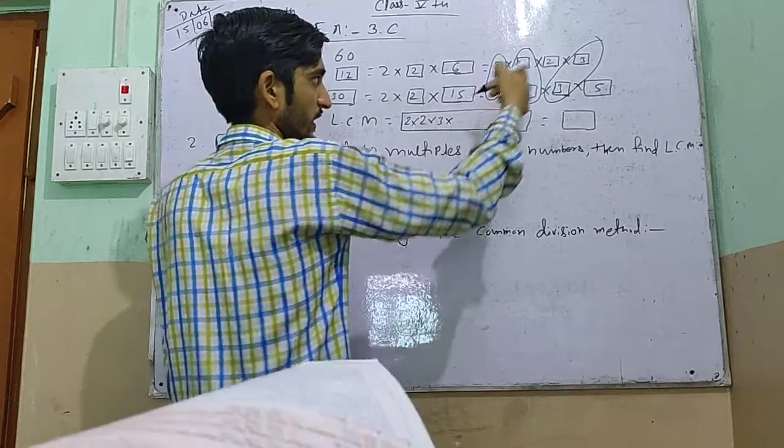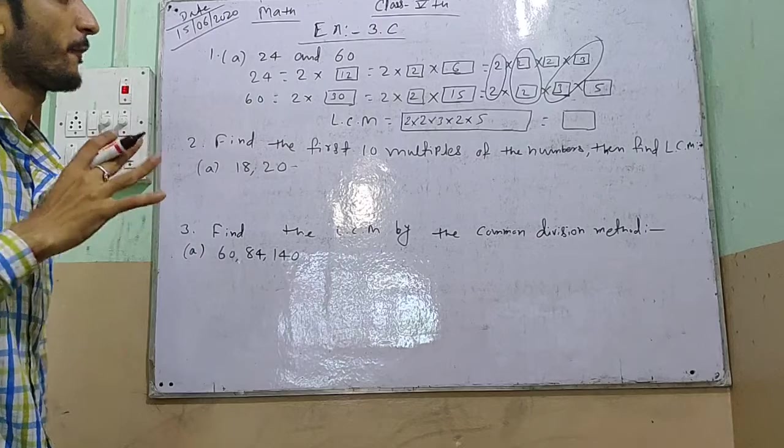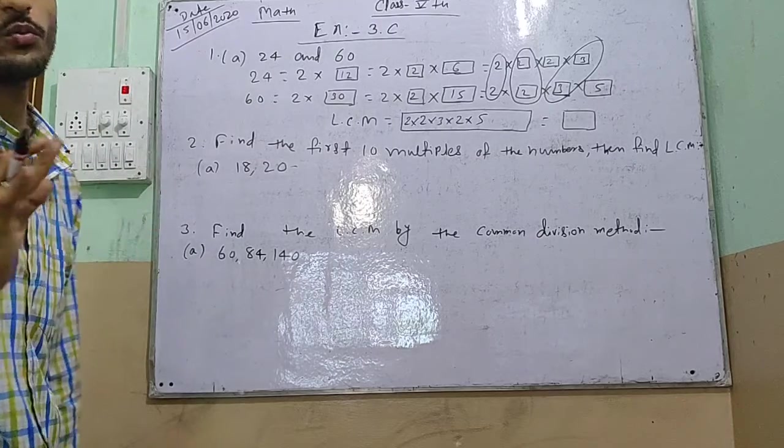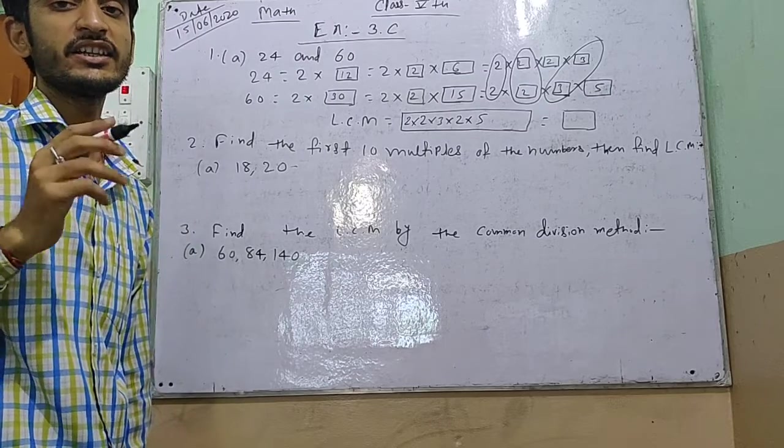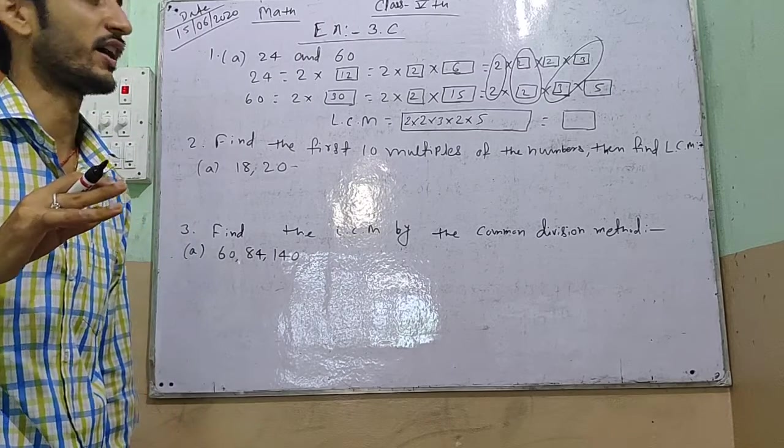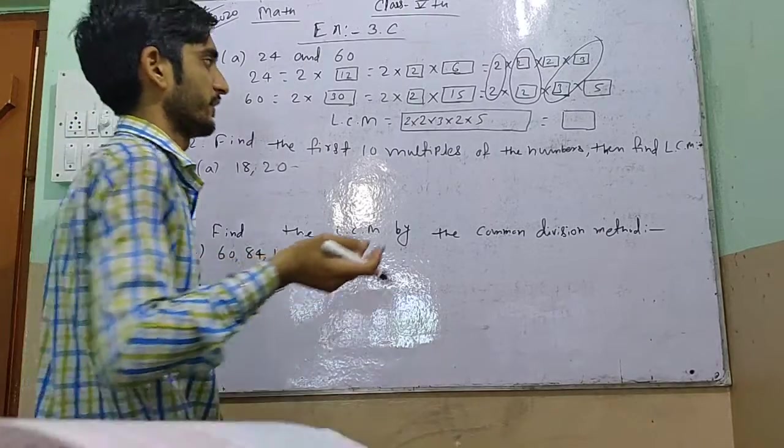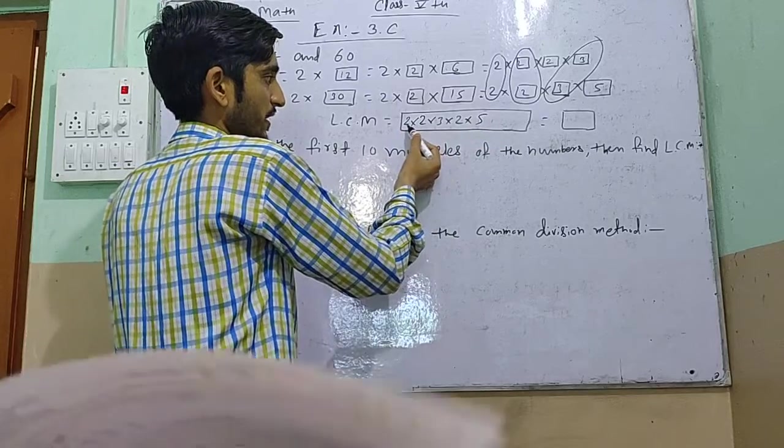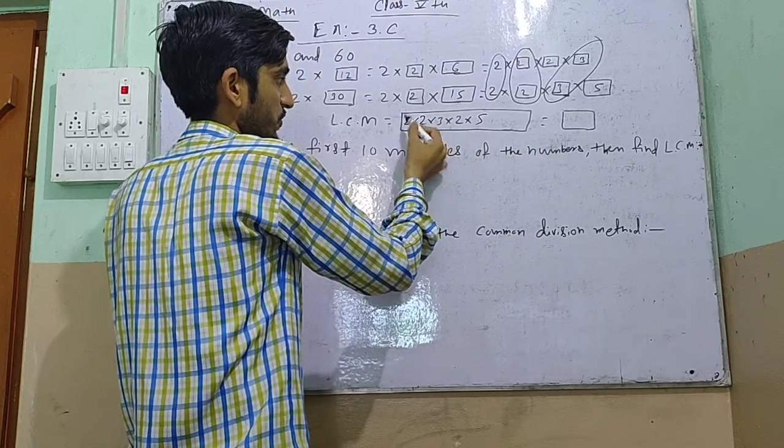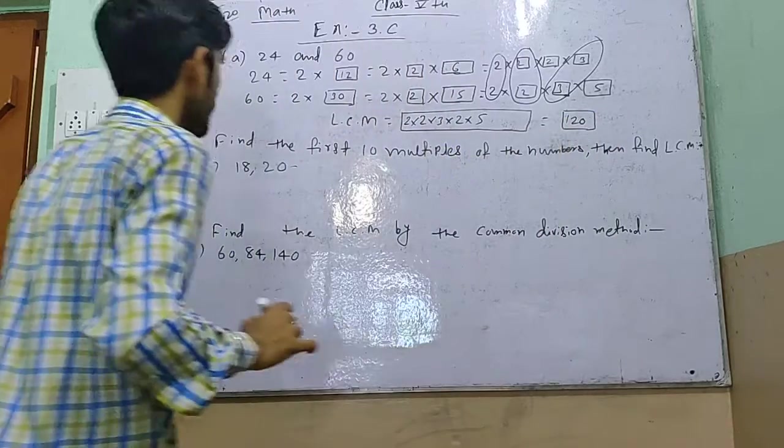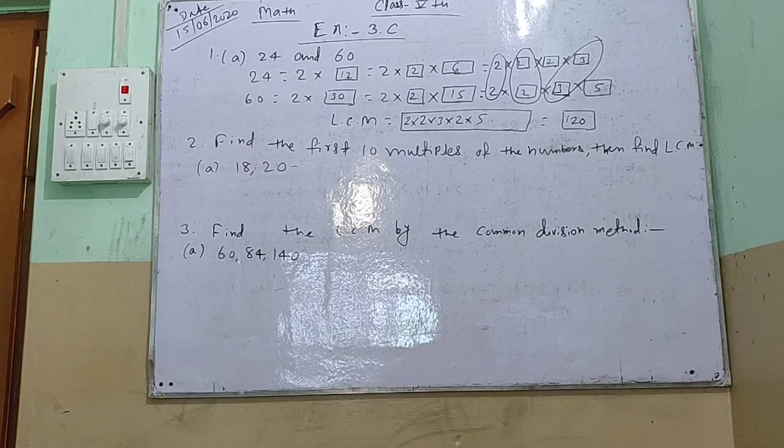So this is the common factor. I will write the same. What do you have to write? Common factor and non-common factor. Then I will write the same as the common factor. Multiply it. Factor 2, 2, 3, 3, 5. The LCM for 24, 60 is 120.